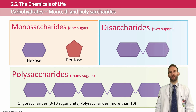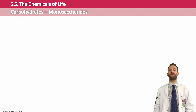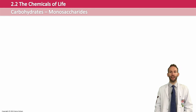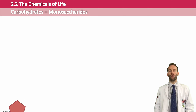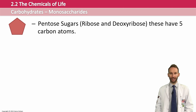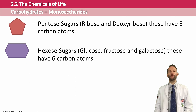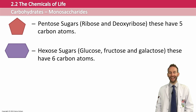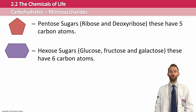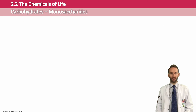Monosaccharides are the most simple of carbohydrates. You need to be familiar with ribose and deoxyribose, which are five-carbon pentose sugars, and glucose, fructose, and galactose, which are all six-carbon hexose sugars. However, you need to really know the detail and be able to draw glucose and ribose — these are the two that are very important.